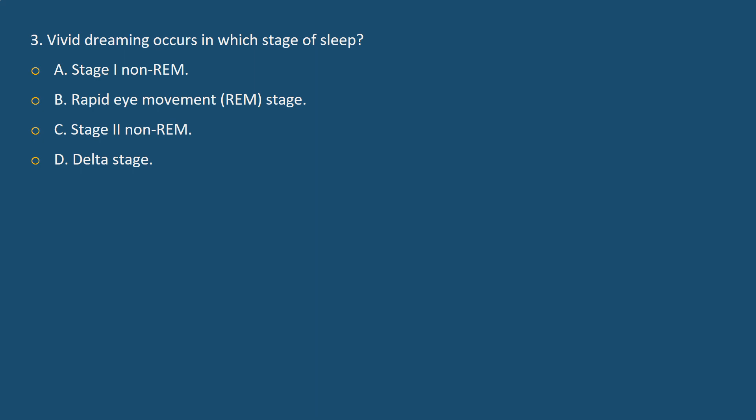Question 3. Vivid dreaming occurs in which state of sleep? A. Stage 1 non-REM. B. Rapid eye movement (REM) state. C. Stage 2 non-REM. D. Delta stage.